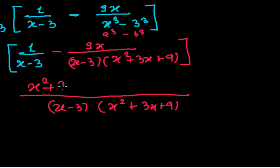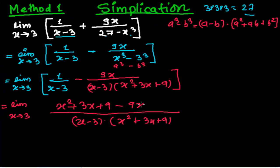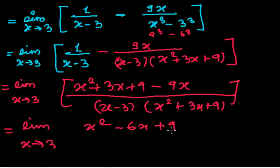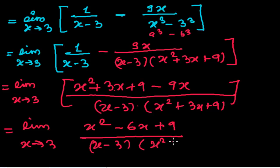So we get x squared plus 3x plus 9 in the denominator part. Now limit when x tends to 3, the numerator becomes x squared plus 3x minus 9x, which is minus 6x plus 9, all divided by x minus 3 times x squared plus 3x plus 9.